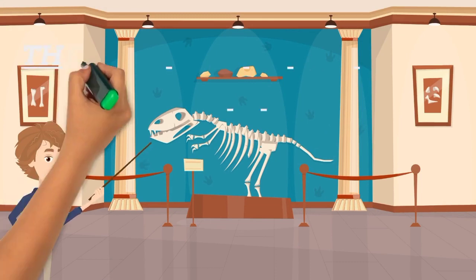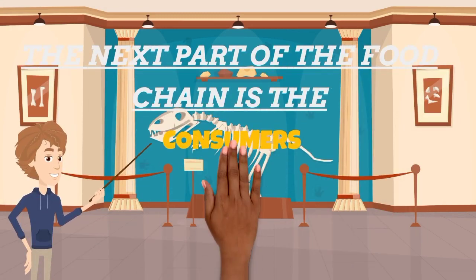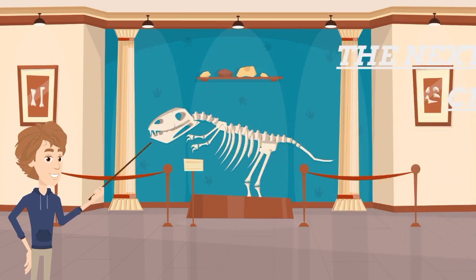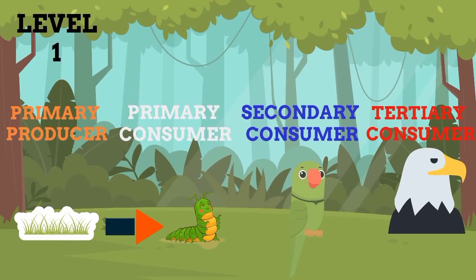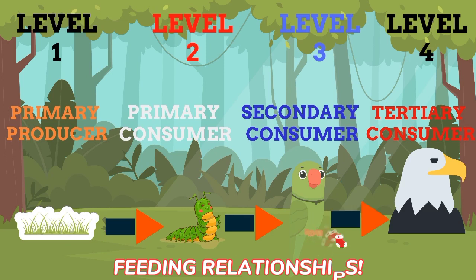The next part of the food chain is the consumers. Now, there are different types of consumers. Nevertheless, they all depend on a producer to obtain food. As shown in the simple linear sequence here, there is the primary producer, then the primary consumer, followed by the secondary, then a tertiary consumer. These organisms are arranged in levels in the chain, referred to as trophic levels.